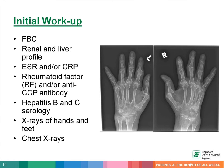The initial investigation includes full blood count, renal and liver profile, inflammation markers like ESR and C-reactive protein, rheumatoid factor and anti-CCP antibody, hepatitis B and C serology, x-ray of the hands and feet, and chest x-ray. The x-rays shown on the slide demonstrate features of established rheumatoid arthritis with joint erosions, joint subluxation, reduced joint space, and pancarpal ankylosis.